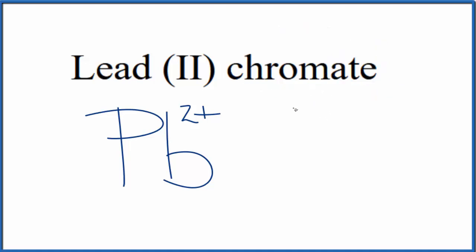So you either memorize that the chromate ion, that's CrO4, the whole thing has a charge of 2-, or if you're allowed, you can look it up on a table of polyatomic ions.